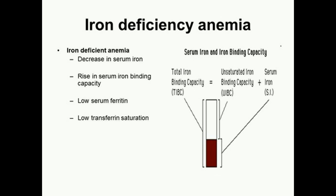Total iron binding capacity: transferrin, as we already know, binds free iron and transports it in the blood. Total iron binding capacity measures the blood's capacity to bind iron with transferrin. It is calculated by adding serum iron and unsaturated iron binding capacity, and is mostly used along with the serum iron test to evaluate people suspected of having either iron deficiency anemia or iron overload.